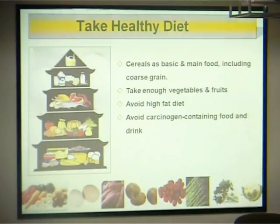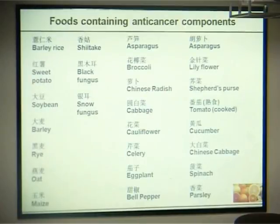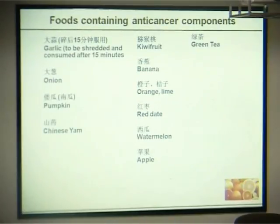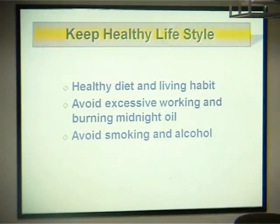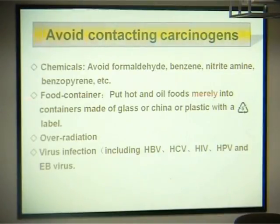Avoid carcinogen-containing foods and drinks. These are foods containing anti-cancer components — all these foods are good for us. Keep a healthy lifestyle with healthy diet and sleeping habits. Avoid excessive working and burning midnight oil. Avoid smoking and alcohol. Avoid contact with chemical carcinogens such as formaldehyde, benzene, and nitrosamine. Use food containers made of glass or china, or plastic with a safety label.